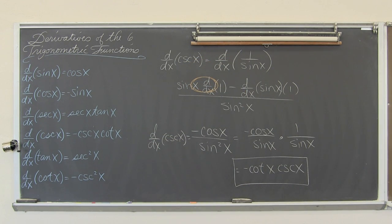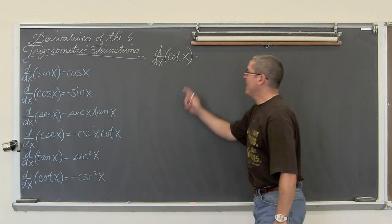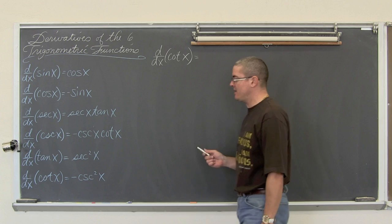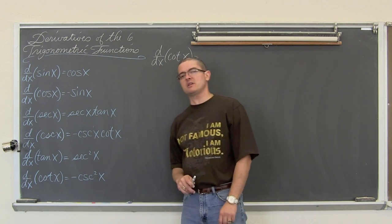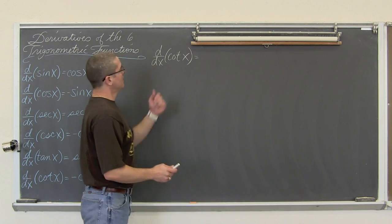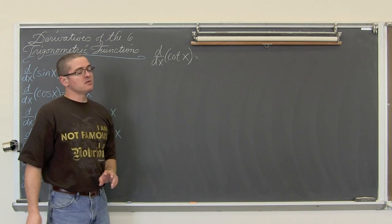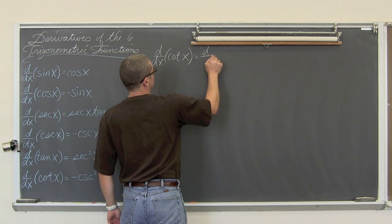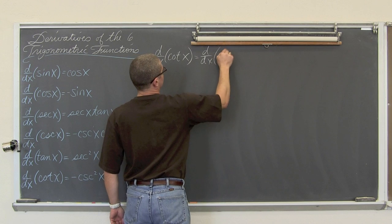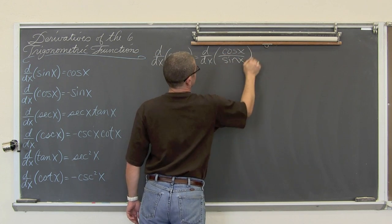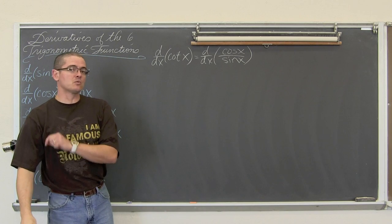We are going to do one more example and that will be the end of this video. For our second and last example we have the derivative with respect to x of the cotangent of x. Why is that equal to negative cosecant squared? Well, the building blocks for cotangent are cosine over sine. So this is equal to the derivative with respect to x of cosine of x over sine of x, and that means we are going to need the quotient rule again.